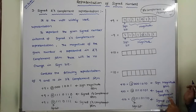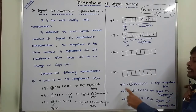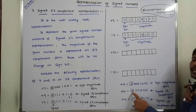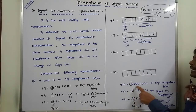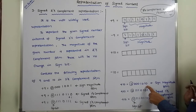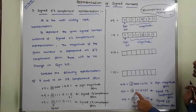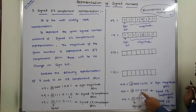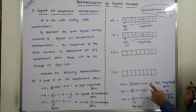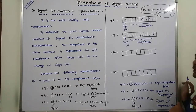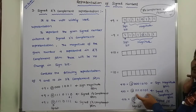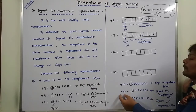The signed one's complement representation of plus 10 is obtained with no change in the sign bit position. Only the magnitude bits are changed from 0 to 1 and 1 to 0. So 0 becomes 1, 0 becomes 1, 0 becomes 1, 1 becomes 0, 0 becomes 1, 1 becomes 0, and 0 becomes 1. This is the signed one's complement representation of plus 10.